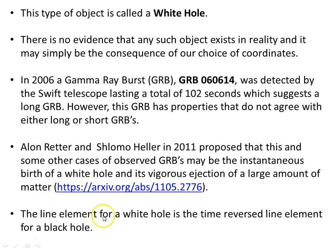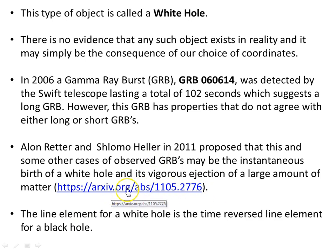The interesting thing is that the line element for a white hole is the time-reversed line element for a black hole. A white hole expels all matter and energy — nothing can go in — with a singularity from which matter and energy move outwards. A black hole has a singularity into which matter and energy move inwards. So a white hole is a time-reversed black hole. Whether or not such things exist, there is no evidence yet, but we should keep in mind that black holes were also initially thought to be a mathematical curiosity, and now there is clearly a lot of evidence for their existence.